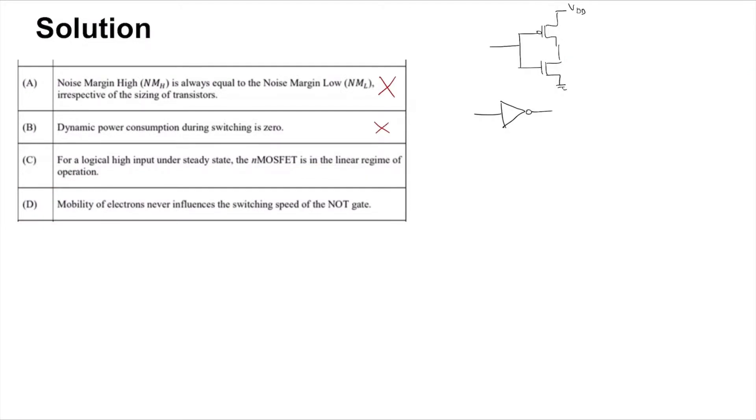And finally option C. Well, when you have a logical high input, that is the input is at VDD, the output will be at 0. And for VDS equal to 0, the NMOS transistor is clearly in the linear region, because VDS is now less than VGS minus VTH.